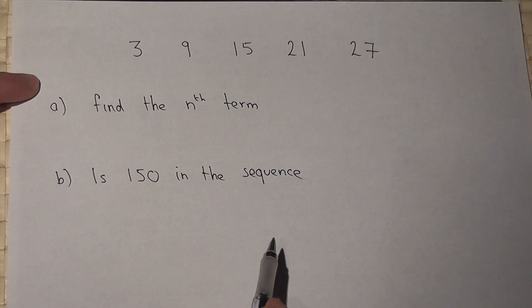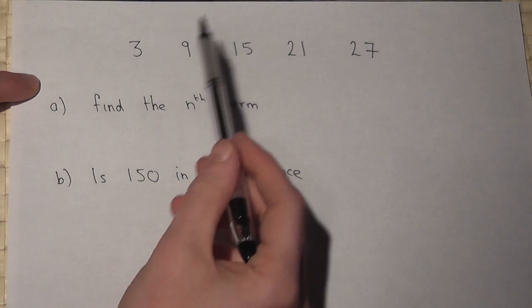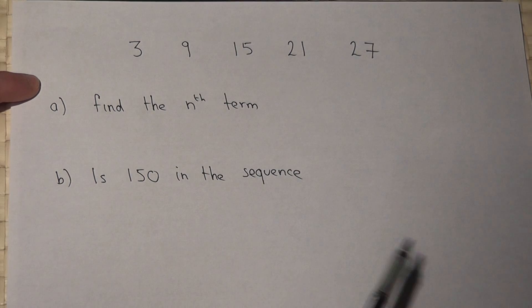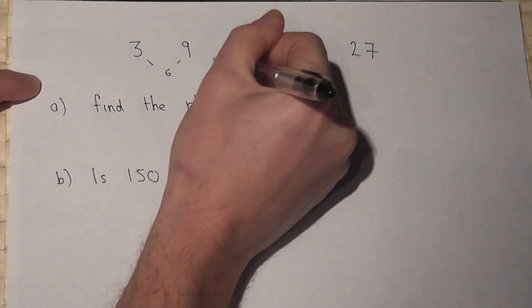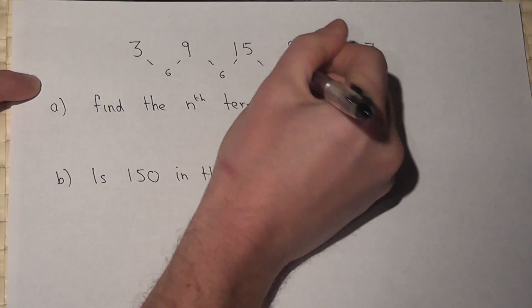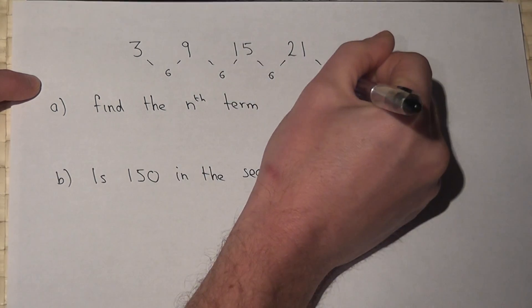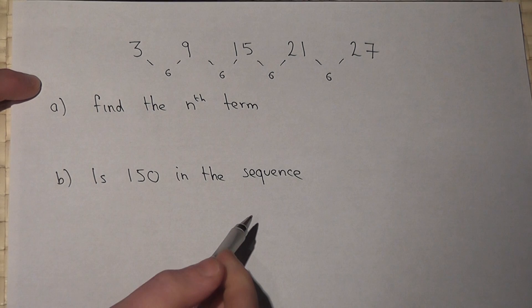This video reviews how to find the nth term for an arithmetic sequence. This is arithmetic because there's a constant difference between each of the terms, which in this case is 6.